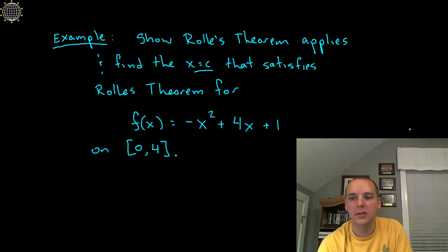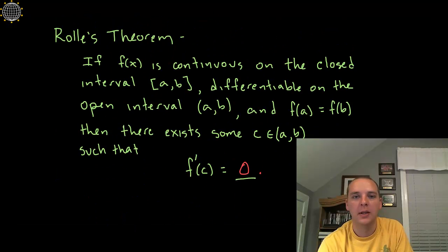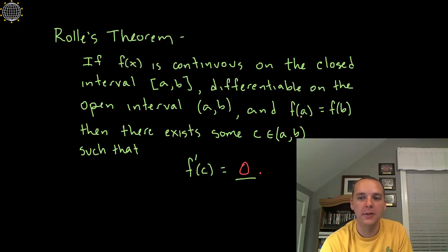Now what was Rolle's Theorem? Let's just remind ourselves real quick. It says that if a function is continuous on the closed interval, like 0 to 4, differentiable on the open interval 0 to 4, and f of 0 equals f of 4, then there has to be some x value, some x equals c, on the interval 0 to 4, such that the derivative there equals 0.